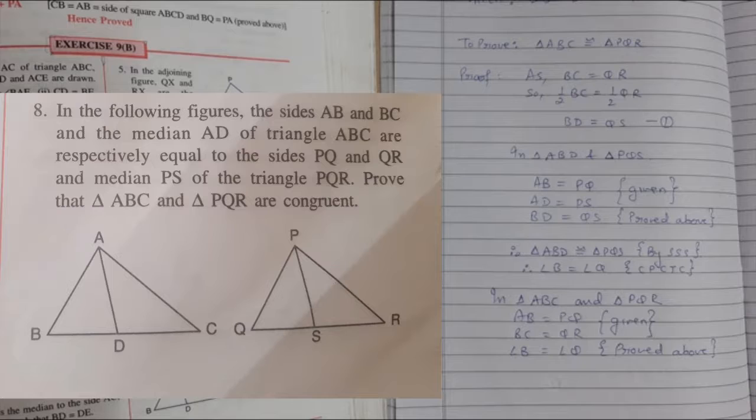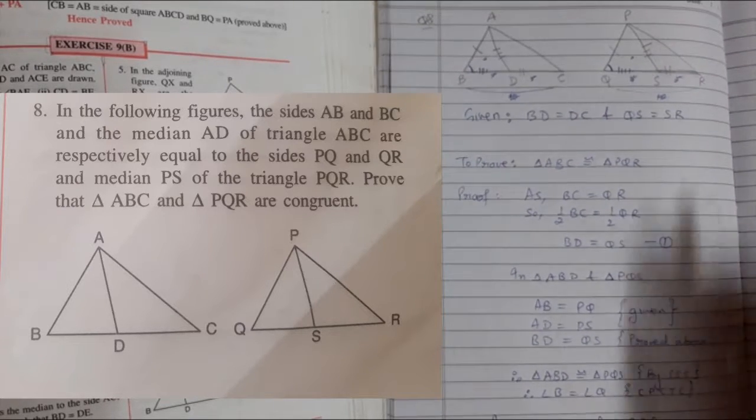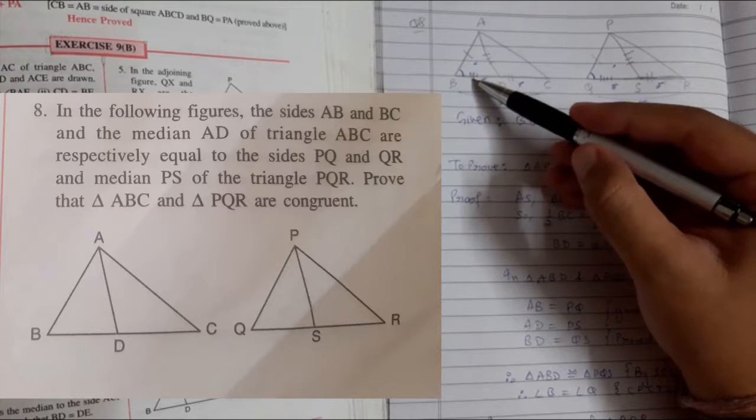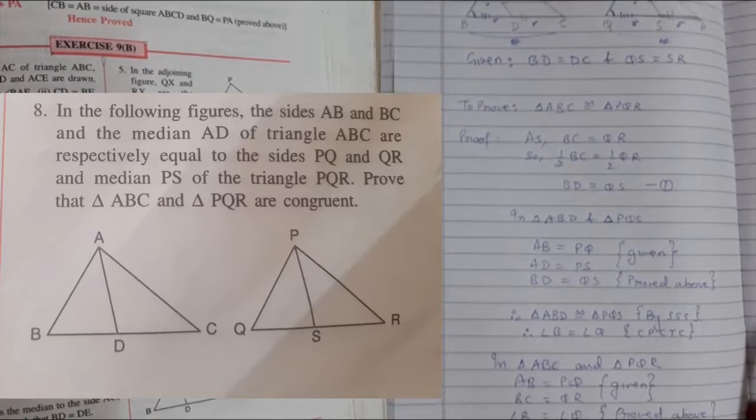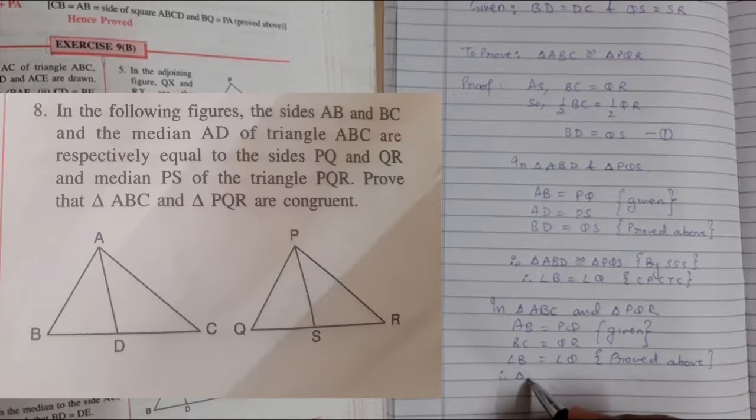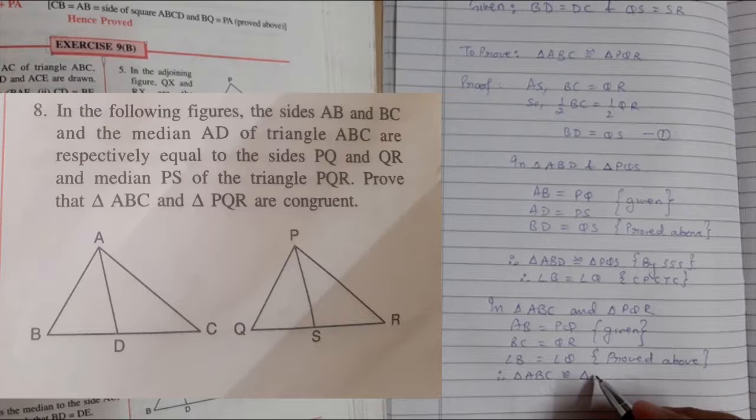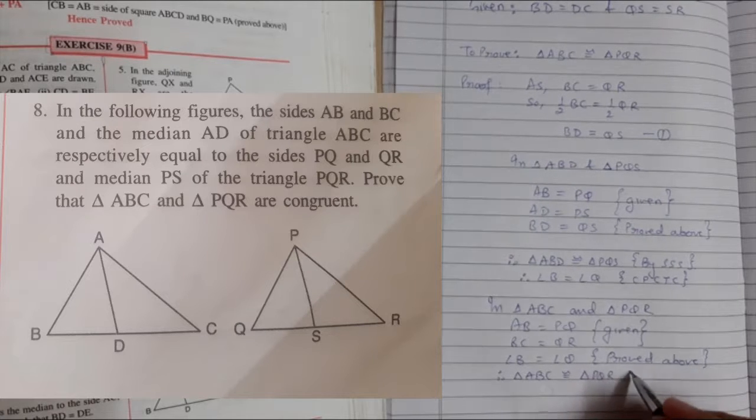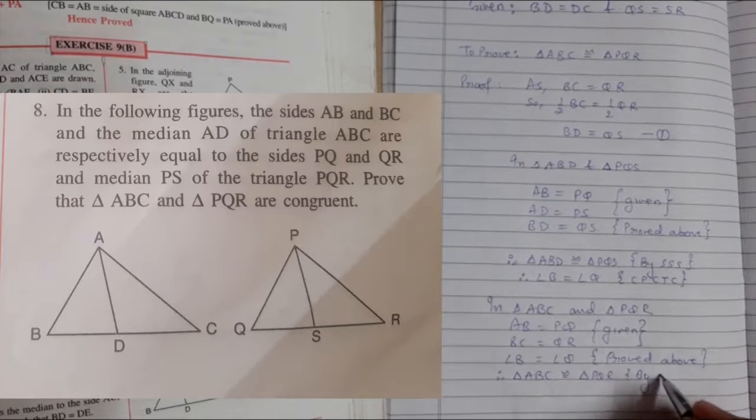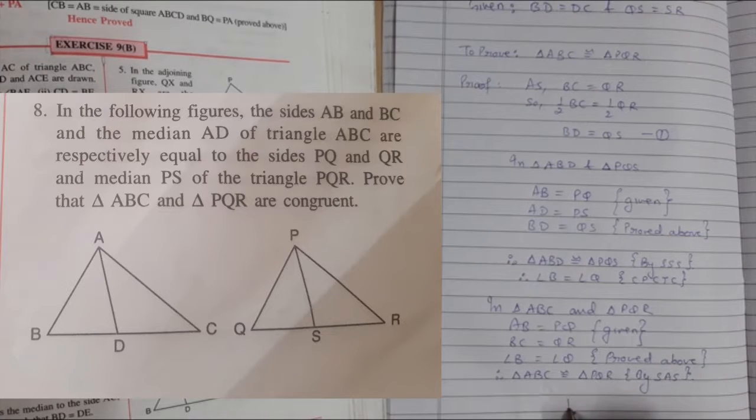We have three things: side, angle, and side. Therefore, triangle ABC is congruent to triangle PQR by SAS congruency criteria. Hence proved.